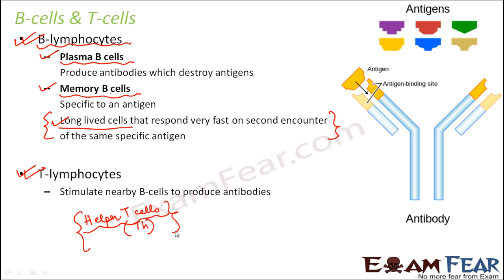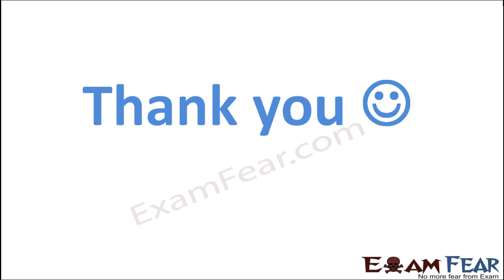T lymphocytes and B lymphocytes are equally important for the immune response of the body. Just as B lymphocytes are required to produce antibodies and remember antigens, if T lymphocytes are not present, the B lymphocytes will not be stimulated to perform their activities. Therefore, both T lymphocytes and B lymphocytes are equally important for immune response.